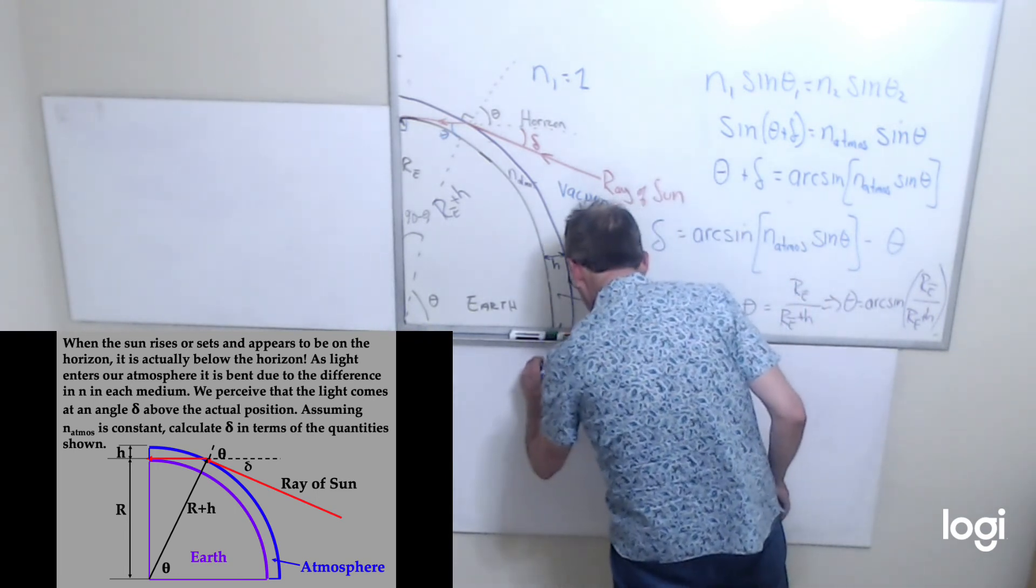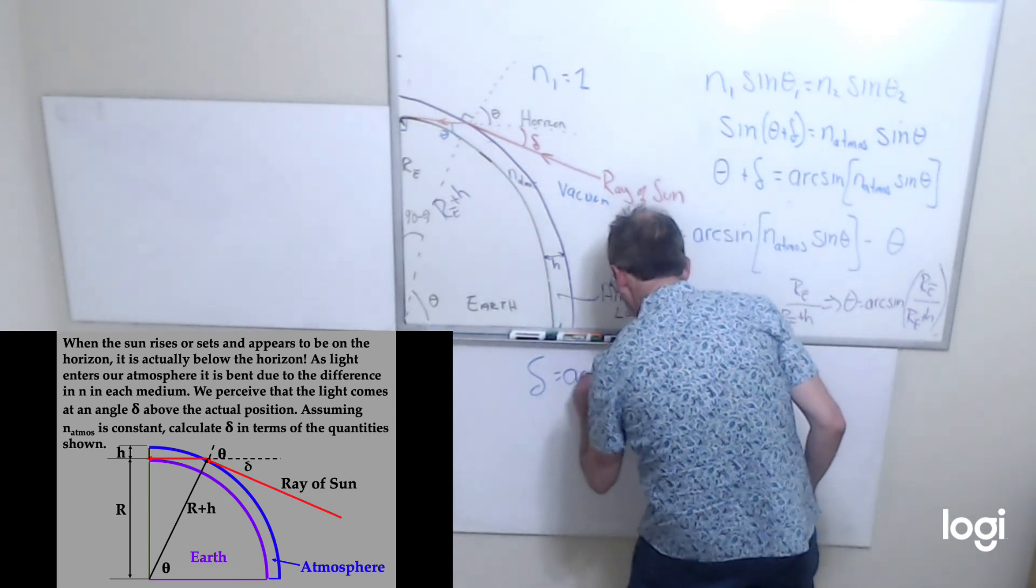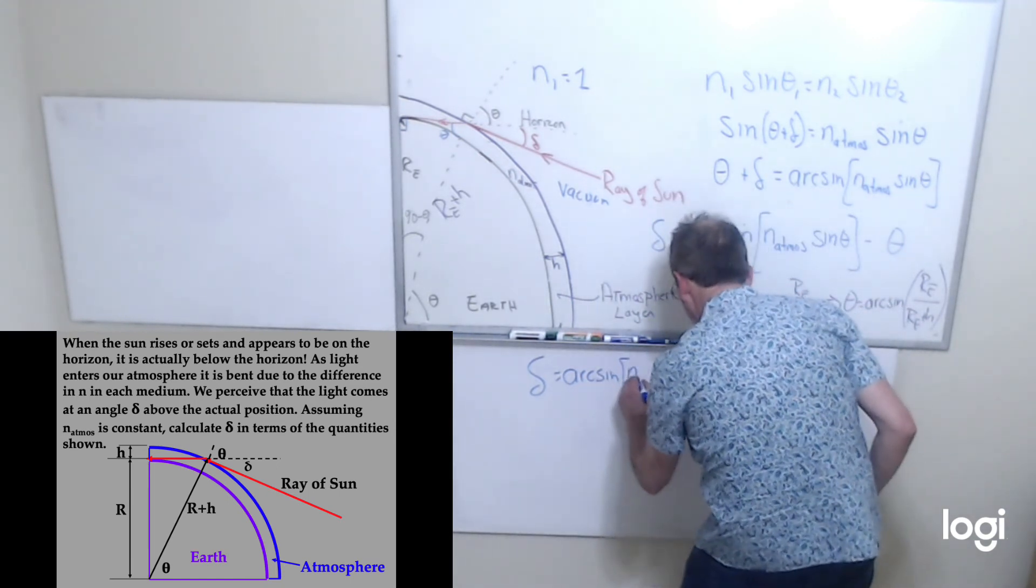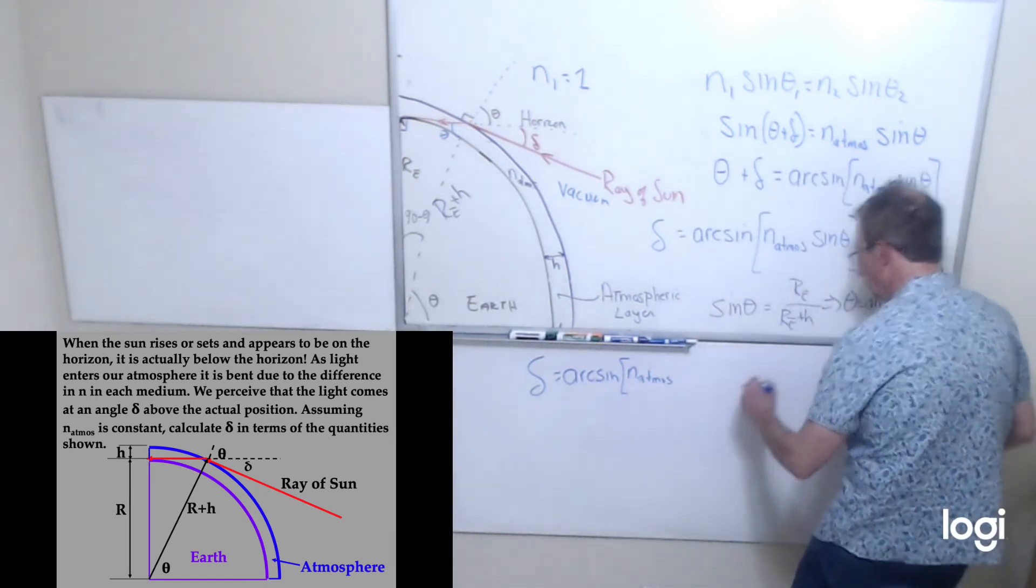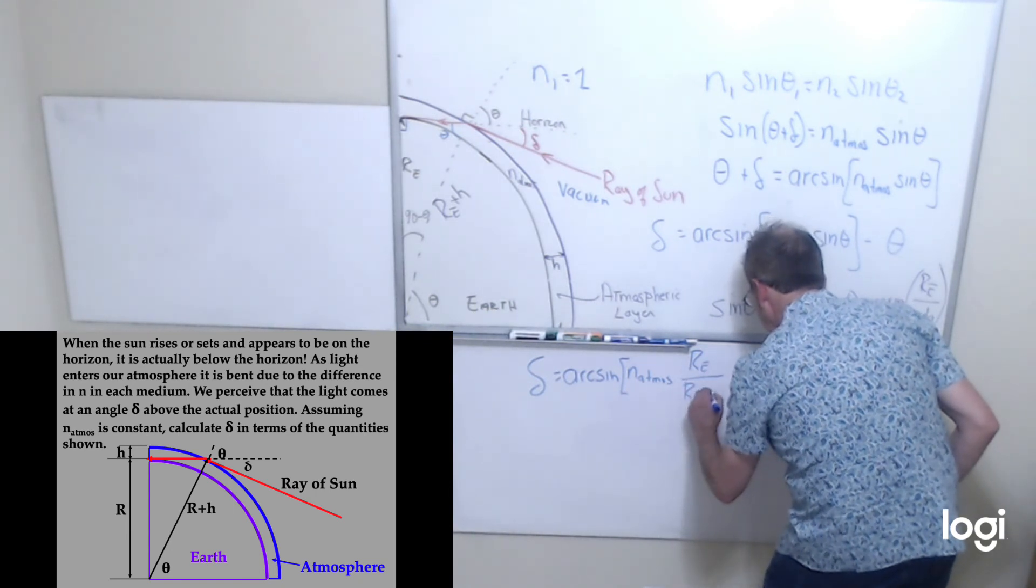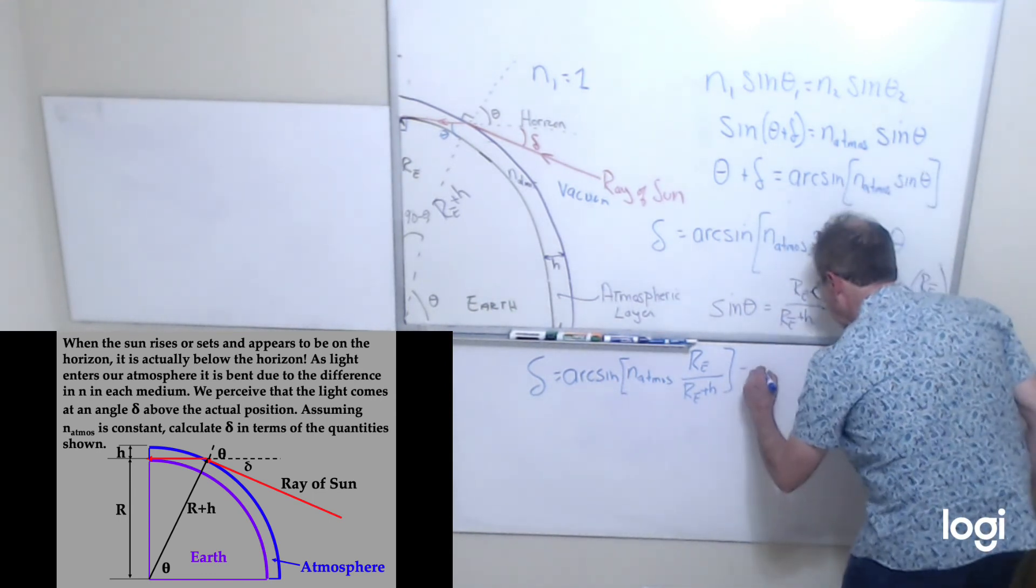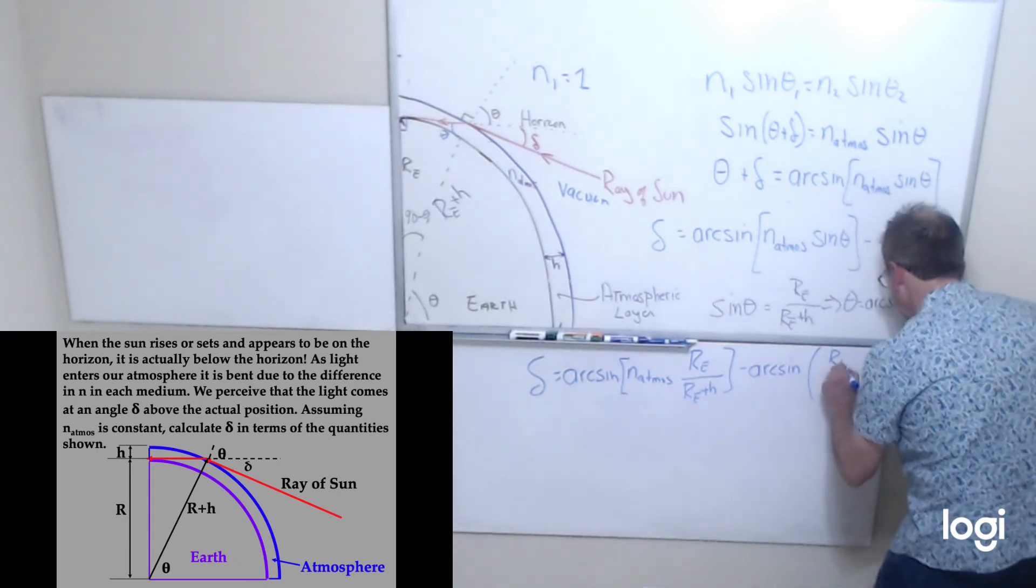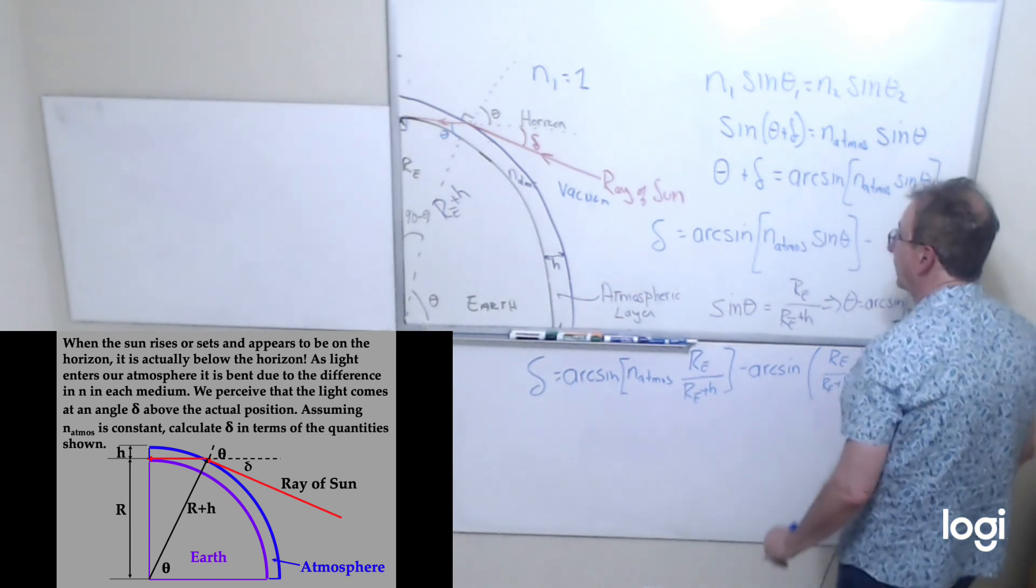I get delta is the arcsin of n_atmosphere times R_E over R_E plus H minus the arcsin of R_E over R_E plus H. And that gives you that angle delta. Remember that this effect occurs twice during the daytime.